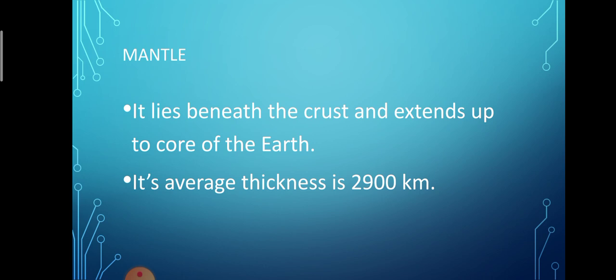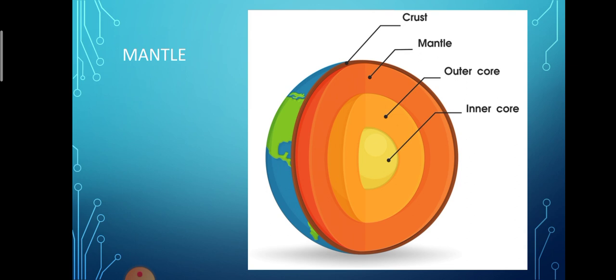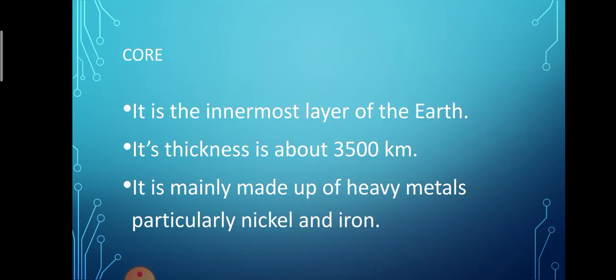The uppermost mantle extends from the crust downward to a depth of 75 km to 100 km. The middle mantle has an approximate depth of 300 km. Just beneath the crust we have the second layer of the earth, that is mantle, and the third layer of the earth is core.